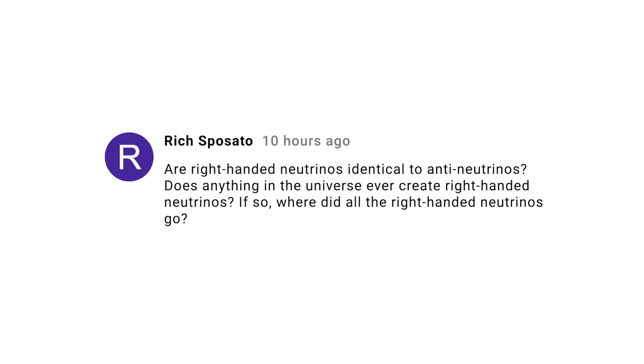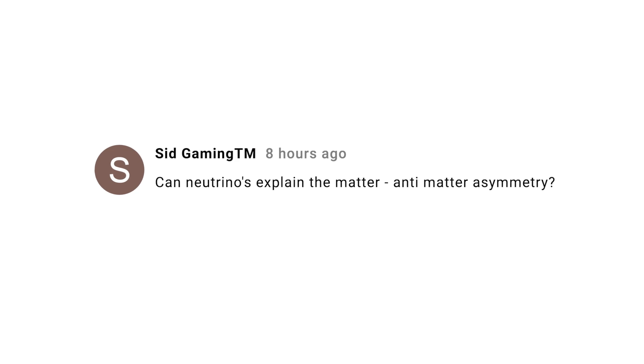Rich Sposato asked about right-handed neutrinos and whether they are anti-neutrinos. Hi, Rich. I answered some of your question in the previous answer, but there's more. We don't know if right-handed neutrinos exist, but there is a theory that says that they do and they're massive. Another piece of that theory suggests that they could be dark matter. The short answer is that we don't know everything, but right-handed neutrinos aren't anti-neutrinos. Sid Gaming asks if neutrinos can explain the antimatter asymmetry. Maybe. There's a theory called leptogenesis that ties neutrinos to the asymmetry. It also requires massive right-handed neutrinos that don't interact via the weak force. I made a long-form video about leptogenesis and the link is in the description. It seems that right-handed neutrinos have popped up in a couple of questions — they might be the subject of a future video.